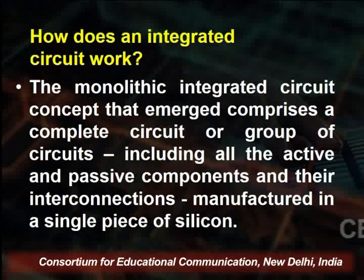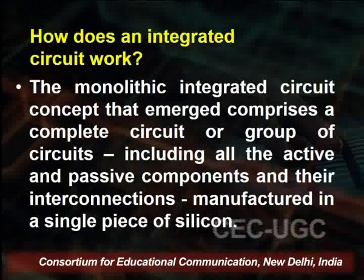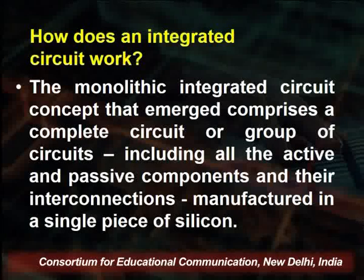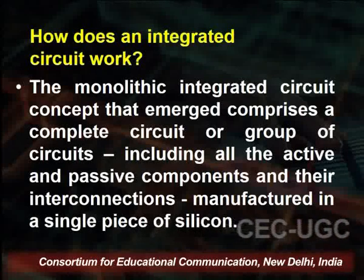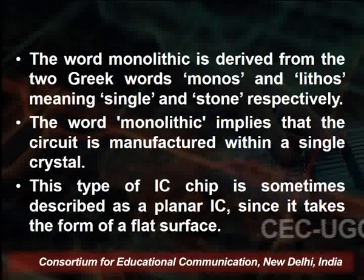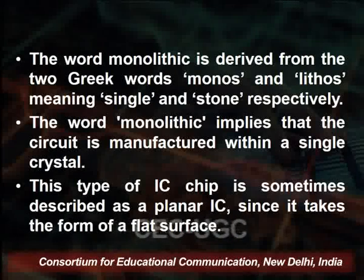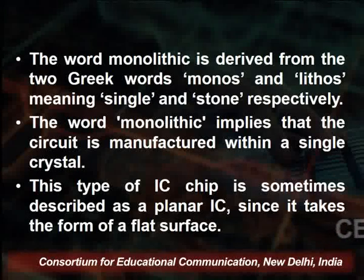How does an integrated circuit work? An integrated circuit works in both passive and active manners. The monolithic integrated circuit concept comprises a complete circuit or group of circuits that includes active and passive components, all interconnected and manufactured on a single piece of silicon. The word monolithic means 'mono' — single — and 'lithic' — stone. So monolithic implies that the circuit is manufactured within a single crystal, where we use silicon and design all the circuitry on it.